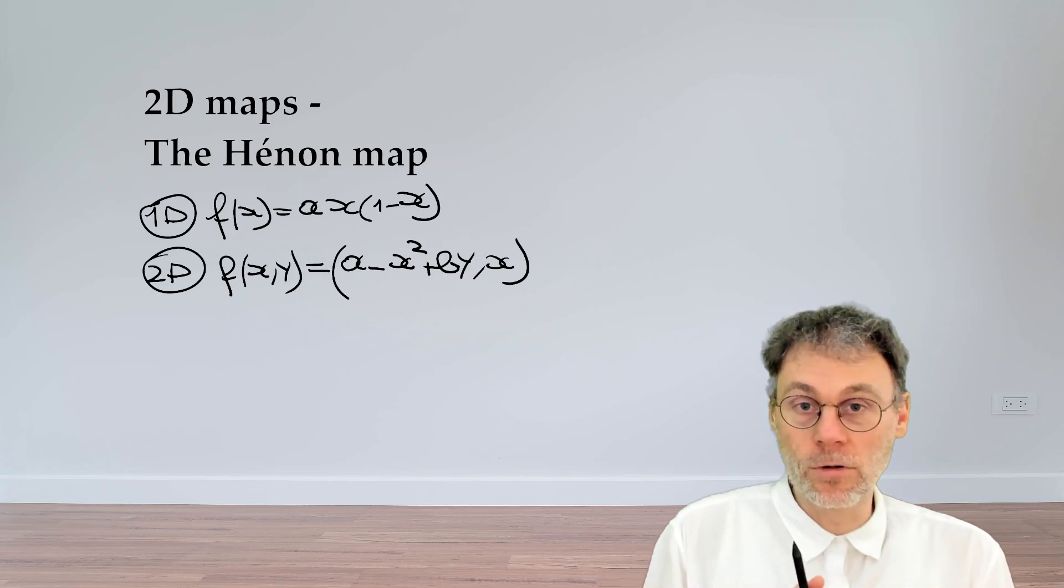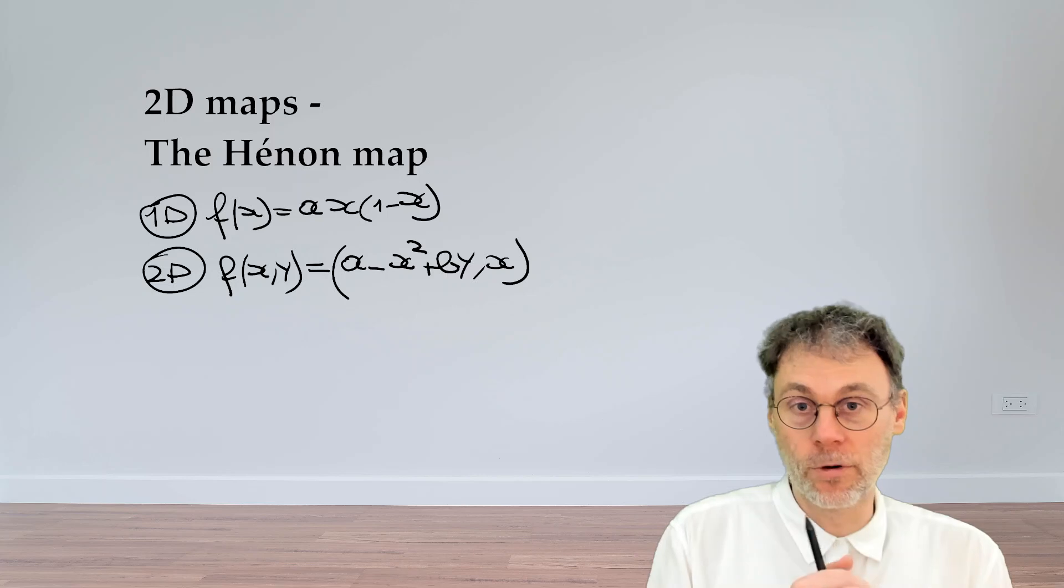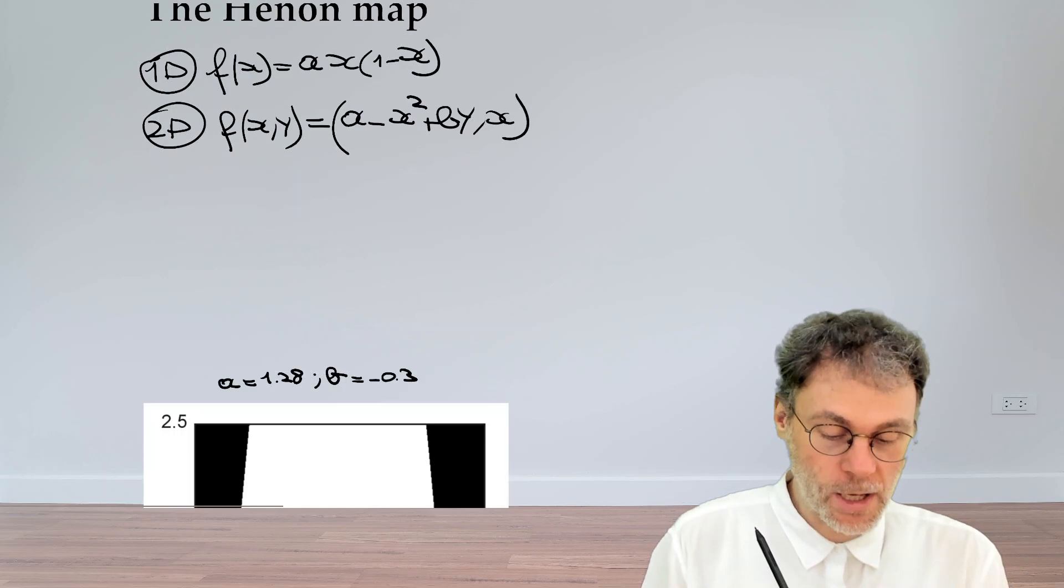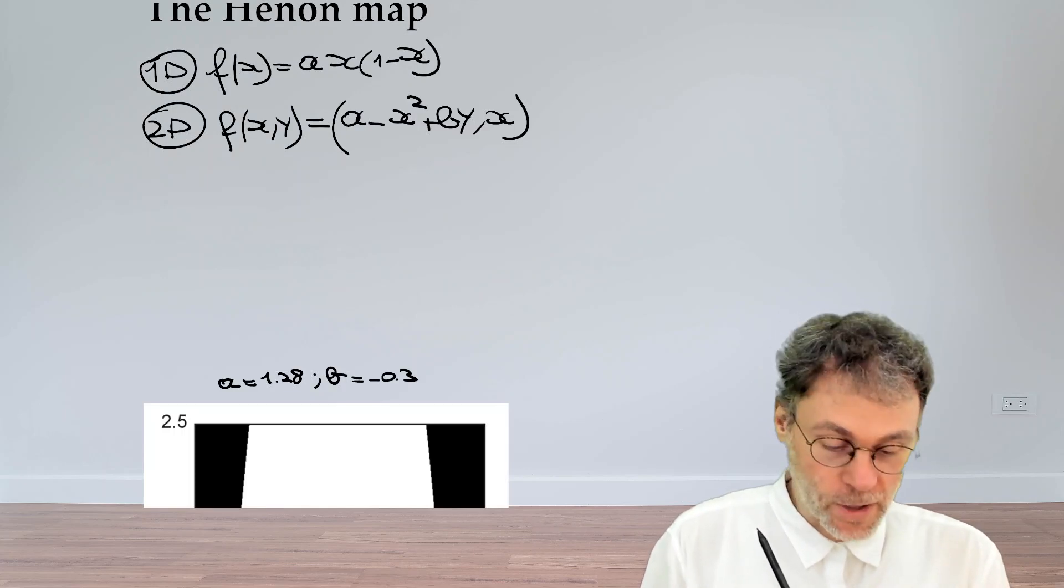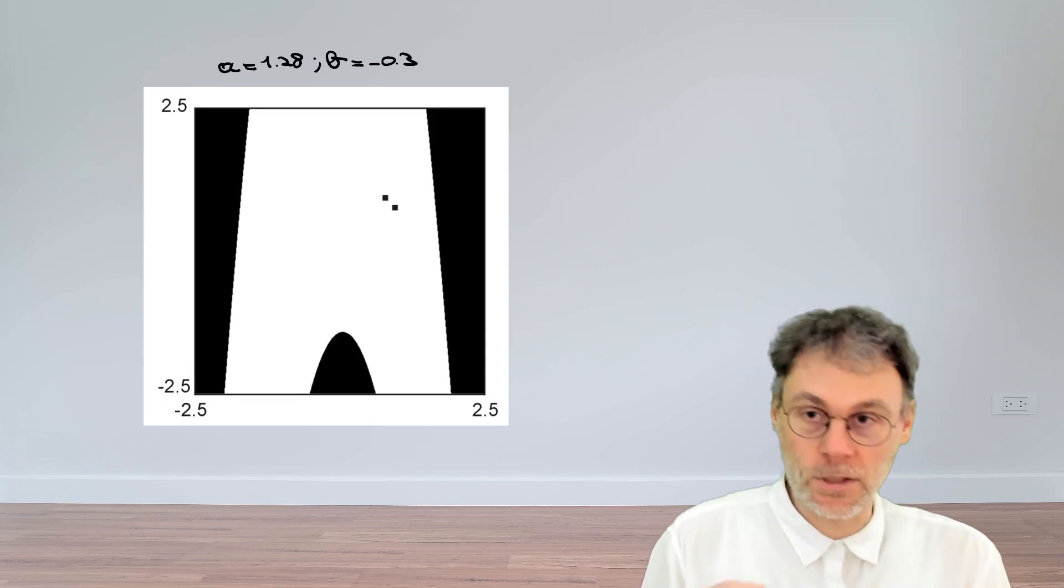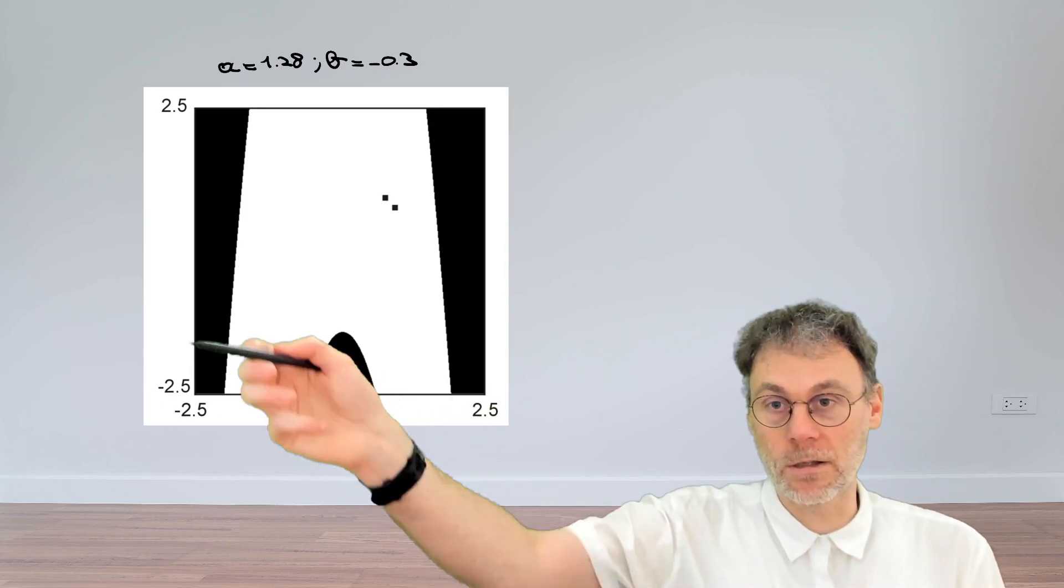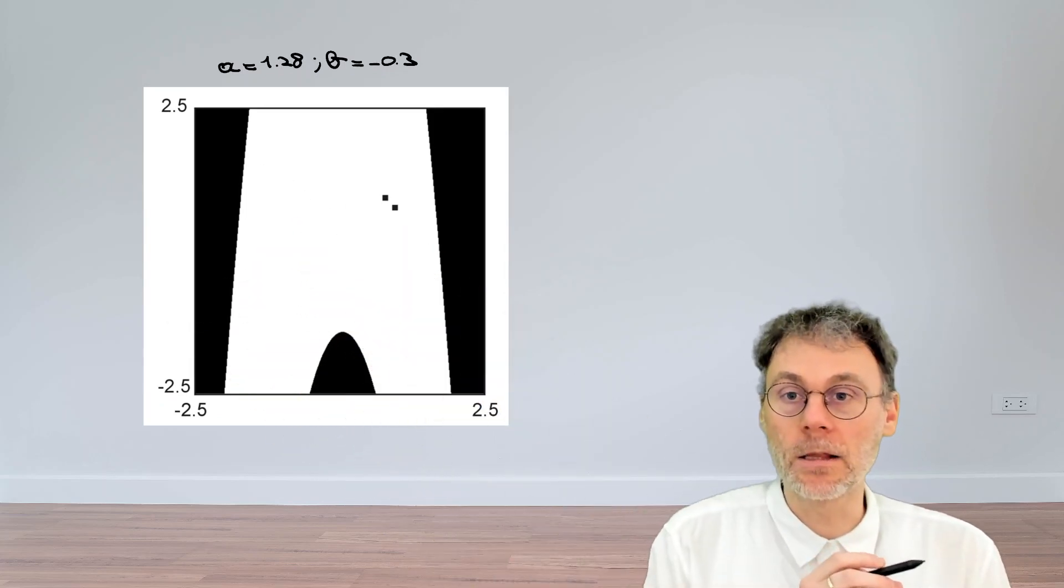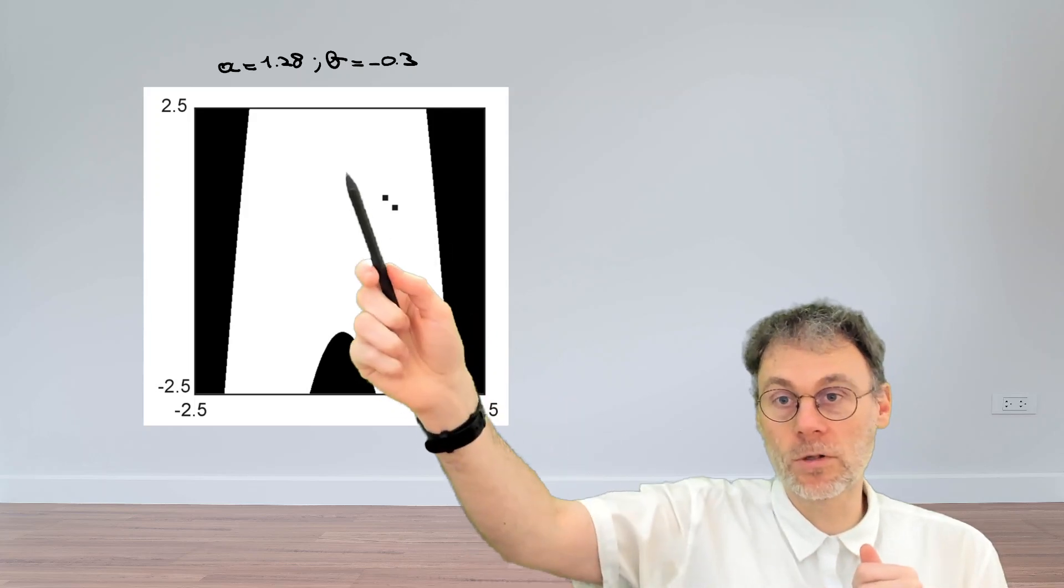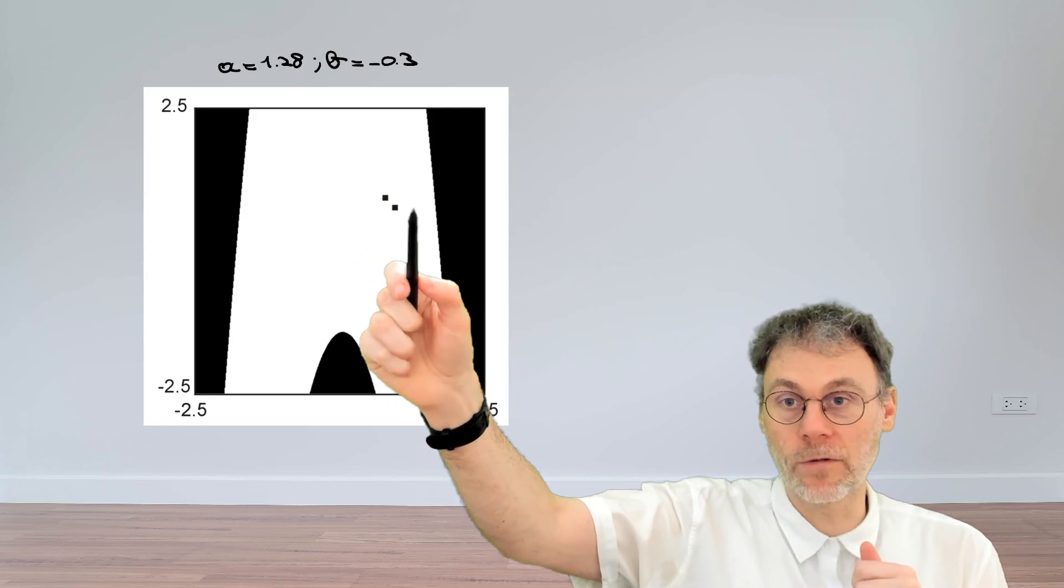The first thing we're going to look at is pick two parameter values, namely a is 1.28 and b minus 0.3. Then we can observe that if we calculate for example the orbits of the origin - this is a diagram where we have x and y - the origin will end up in a period two point.